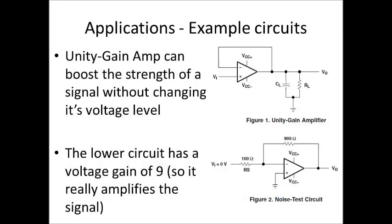With a typical data sheet you'd tend to have something like applications to kind of get you going. If you know how to use these parts, here's an example: use this part like this to make a unity gain amplifier, or in the bottom one it's actually a gain of nine. When we get into your turbidity sensors you'll have to do some things like this — maybe not these exact circuits, but whatever you end up with is going to look sort of similar. It's just examples of things you might want to do with this part.